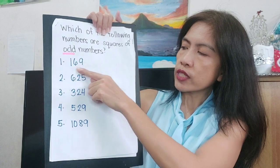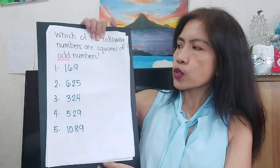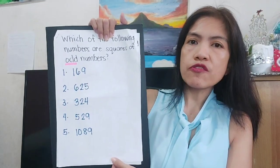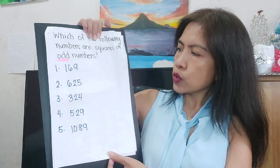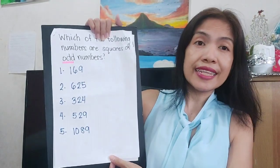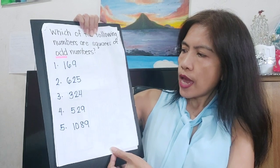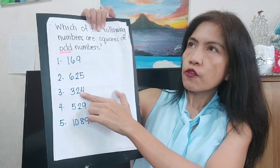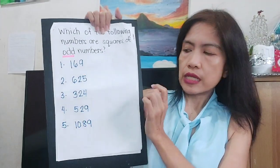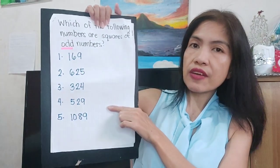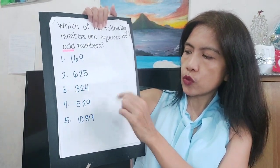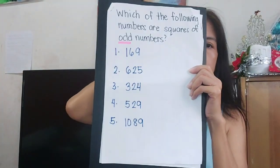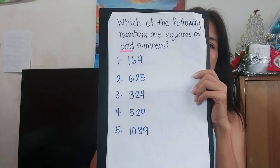If you square them: 169 squared gives 28,561; 625 squared gives 390,625; 528 squared gives 278,784; and 1,089 squared gives 1,185,921. All results confirm the odd number property. Remember the properties so you will be guided.